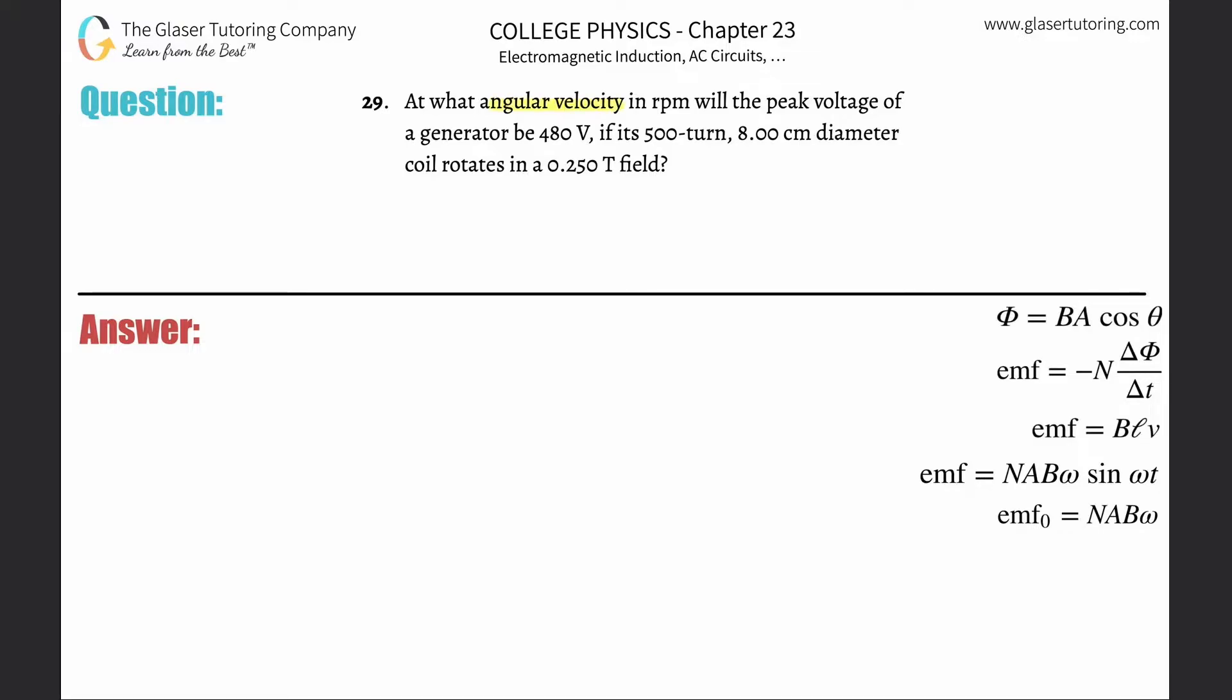Number 29, at what angular velocity in revolutions per minute will the peak voltage of a generator be 480 volts if its 500 turn, 8 centimeter diameter coil rotates in a 0.25 tesla field?